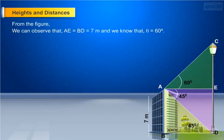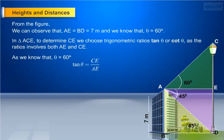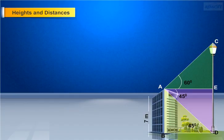From the figure, we can observe that AE equals BD equals 7 meters, and theta equals 60 degrees. In triangle ACE, we choose the trigonometric ratio tan theta, as the ratio involves both AE and CE. Tan theta equals CE by AE, since tan theta equals opposite side by adjacent side. This implies tan 60 degrees equals CE by 7. As tan 60 degrees equals root 3, we have root 3 equals CE by 7, which implies CE equals 7 root 3.